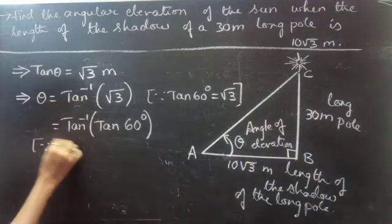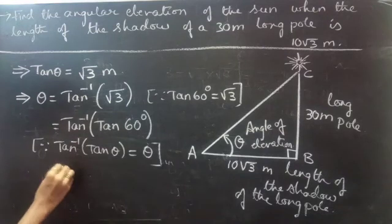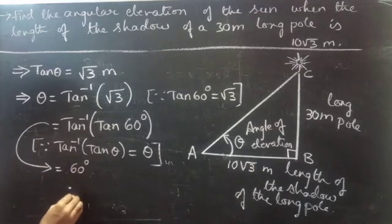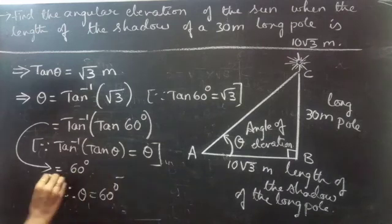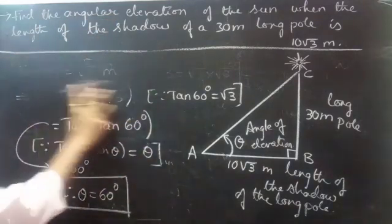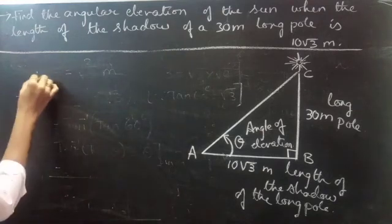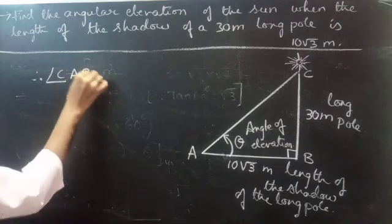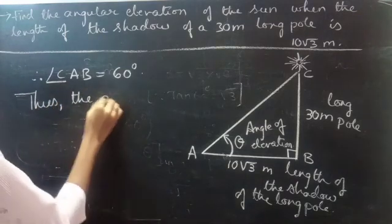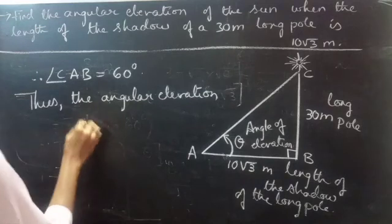You know that tan inverse of tan theta equals to theta. So this becomes 60 degrees. Therefore theta equals to 60 degrees — that means the angular elevation of the sun, or the angle of elevation, equals to 60 degrees. Therefore angle CAB equals to 60 degrees. Thus the angular elevation is 60 degrees.